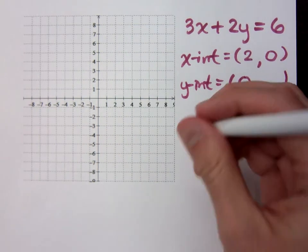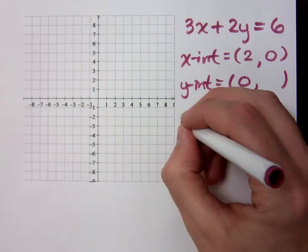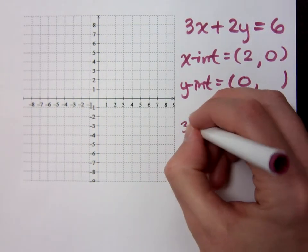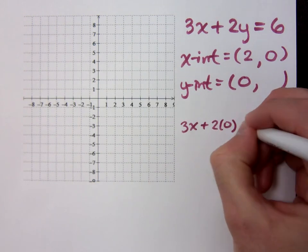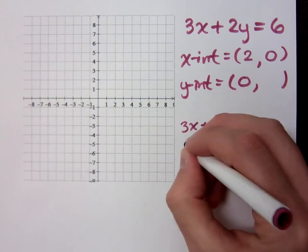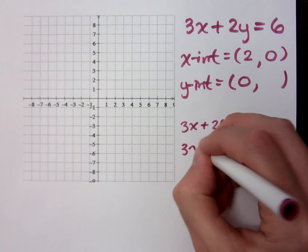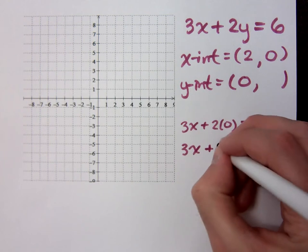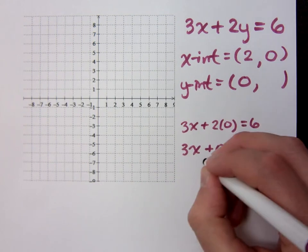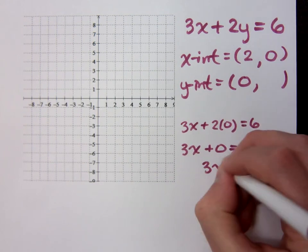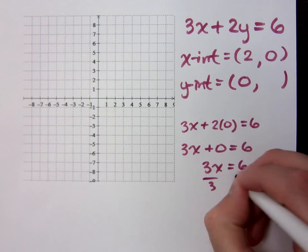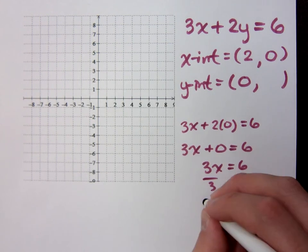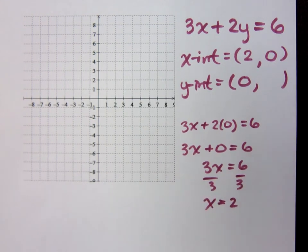If you don't like that shortcut, you can do it the long way and say: if I know that Y is 0, then I have an equation I know how to solve — 3X plus 0 equals 6, so 3X equals 6. Then divide both sides by 3. But that seems like an awful waste of time.